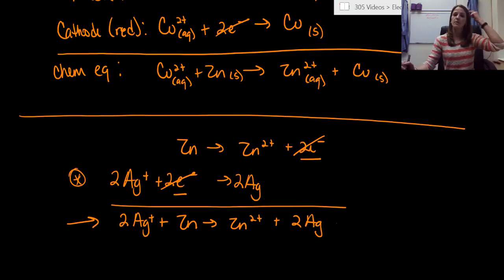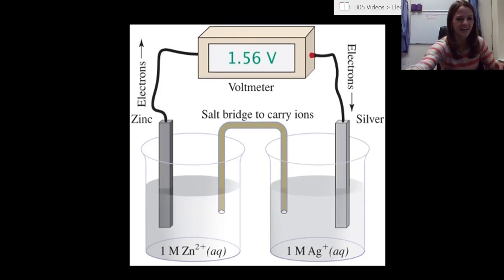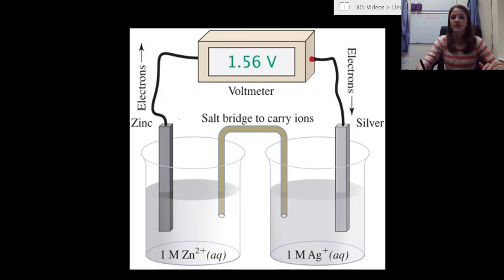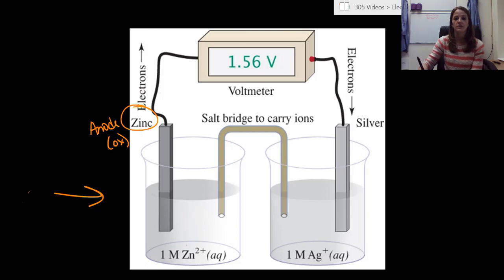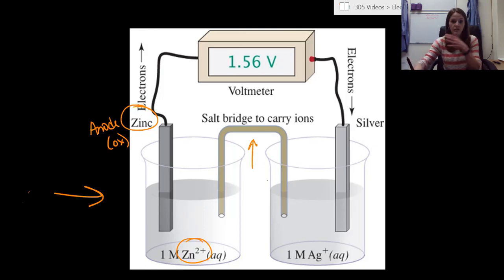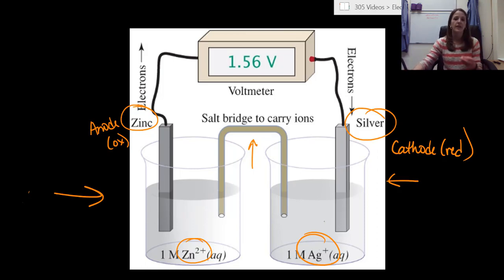Always remember you have to balance out those electrons. Looking at the schematic: the voltmeter shows 1.56 volts difference in potential energy. On the left is the zinc anode where oxidation occurs, with zinc 2+ in solution. A salt bridge connects the two beakers. On the right is the silver cathode where reduction occurs, with Ag+ ions in the beaker. This is a galvanic cell because it is spontaneous on its own in isolation.